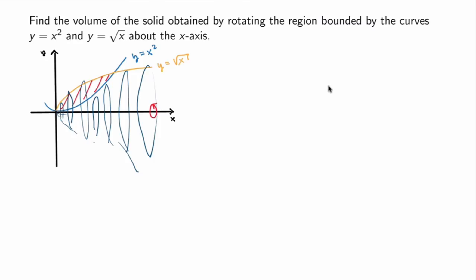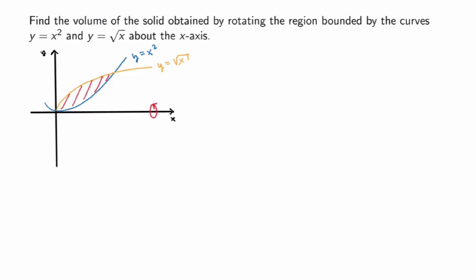Our goal is to calculate the volume of this solid of revolution. Going back to the region rotating about the x-axis: what I'll do is slice it into slices of very small but equal width, calculate the volume of a typical slice, and then sum over all slices. But how do I get these slices?